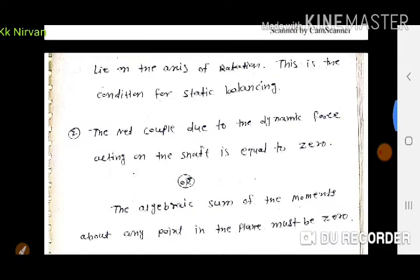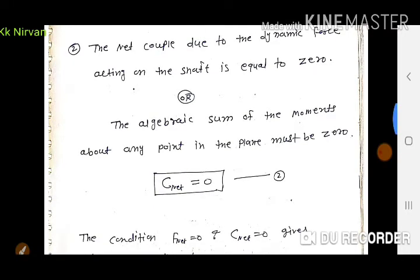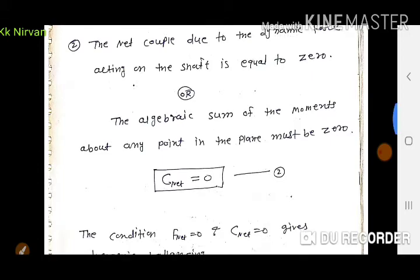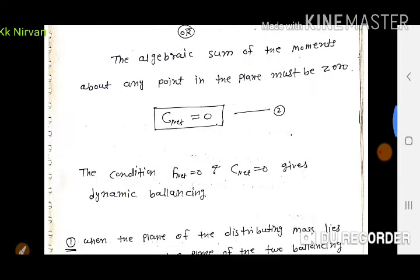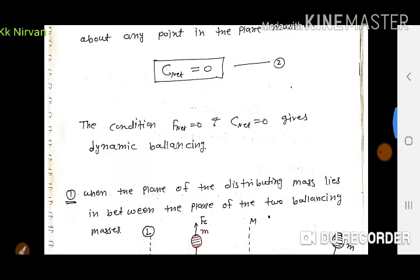Second condition: the net couple due to dynamic forces acting on the shaft must also be equal to zero, i.e., the algebraic sum of the moments about any point in the plane must be zero. किसी भी plane के respect में moment find out किया जाए तो net moment zero होना चाहिए। The conditions F_net = 0 and C_net = 0 together give dynamic balancing.